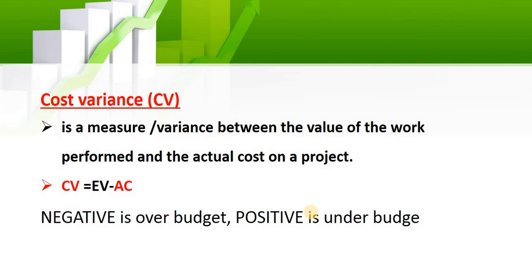Cost variance measures the variance between what you have earned versus the actual cost. If it is negative, you are over budget. If it is positive, you are under budget. So SCV measures earned versus planned, and CV measures earned versus actual.